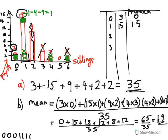In this particular question, the highest frequency is 15, so the mode is one sibling — there were 15 pupils with one sibling, making one sibling the most frequently occurring value.